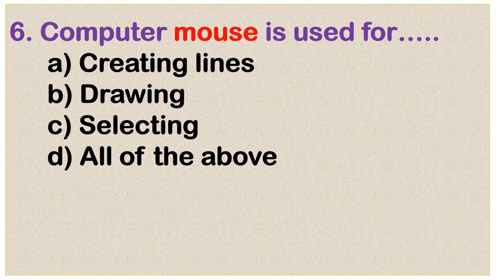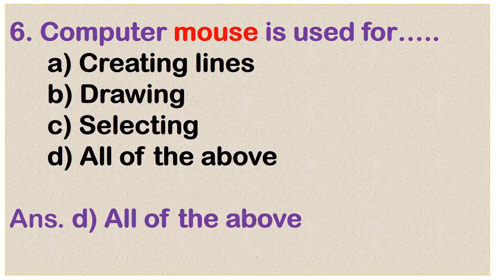Question number 6: Computer mouse is used for creating lines, drawing, selecting, and all of the above. Option D is the correct answer.